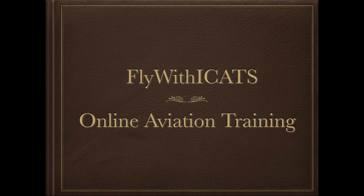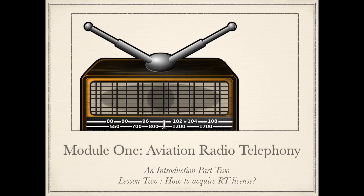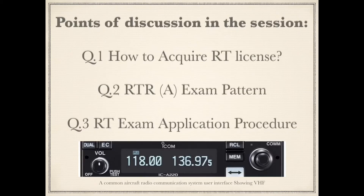Welcome to ICATS Online Aviation Training. This is Module 1: Aviation Radio Telephony, Lesson 2 — An Introduction to RT Part 2. The topic for this session is how to acquire an RT license, covering the RTRA Exam Pattern and RT Exam Application Procedures.